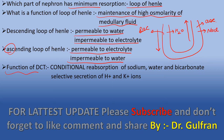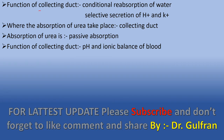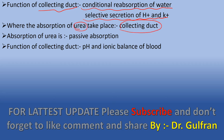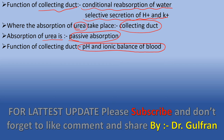The function of DCT is conditional reabsorption of sodium, water, and bicarbonate, and selective secretion of hydrogen ions and potassium ions — not ammonia. The function of the collecting duct is conditional reabsorption of water and selective secretion of hydrogen ions and potassium ions. Absorption of urea takes place in the collecting duct, and it is a passive process not requiring ATP. The function of the collecting duct is pH and ionic balance of body fluid.